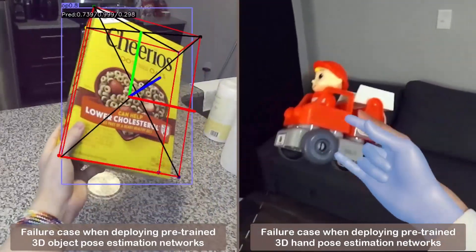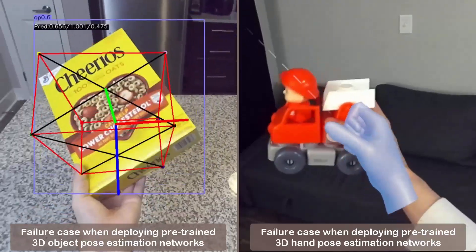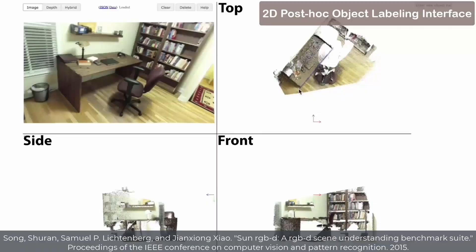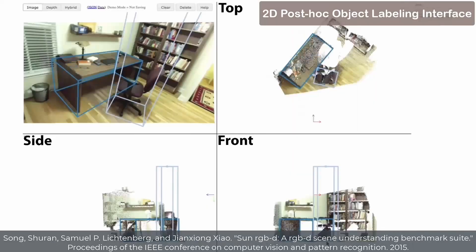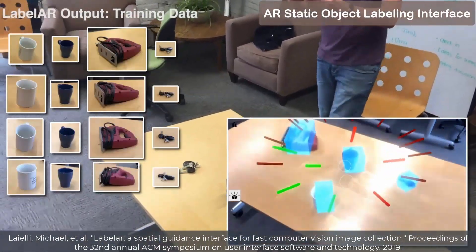One key reason is that it's difficult to collect custom hand and object datasets to train task-specific neural networks in different target environments. Some prior works adopt 2D and AR labeling interfaces, but cannot resolve the occlusion problem when users dynamically manipulate physical objects in mid-air.